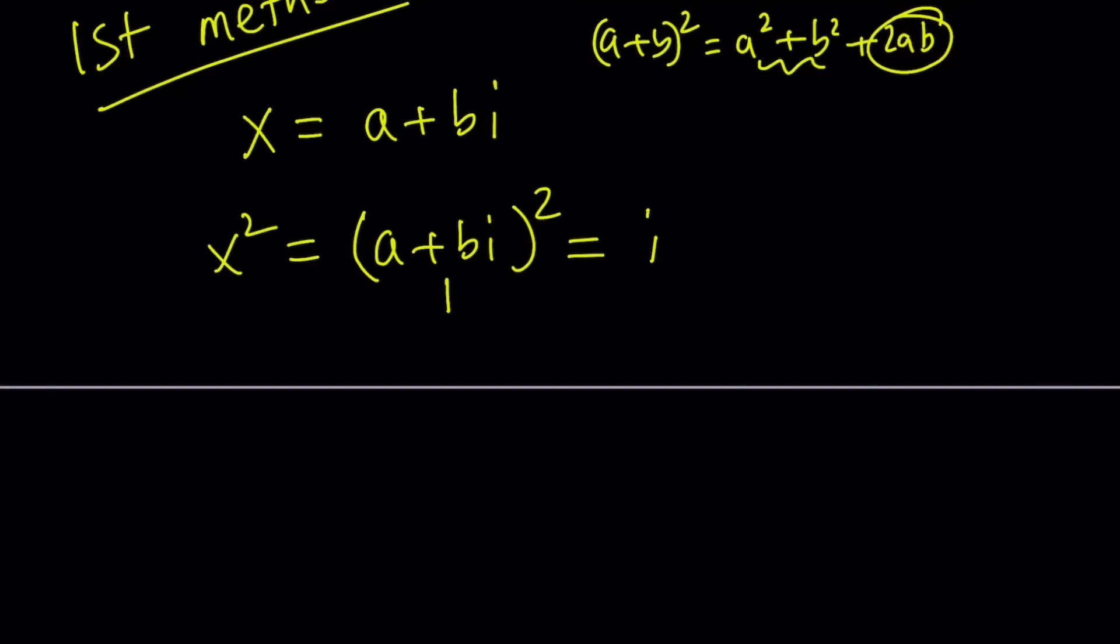Anyways, so let's go ahead and square this. This gives us a squared plus, now how do you square bi? b times i? You square it like this, b squared, i squared. Easy, right? Plus 2abi, don't forget to multiply by i, equals i.